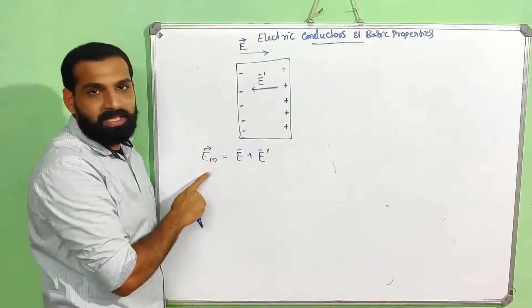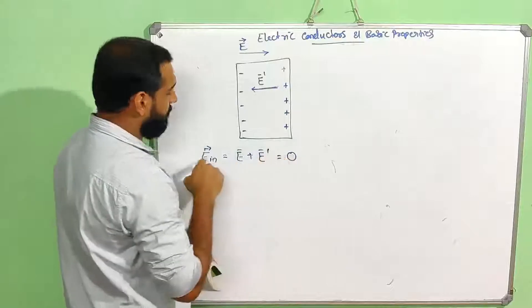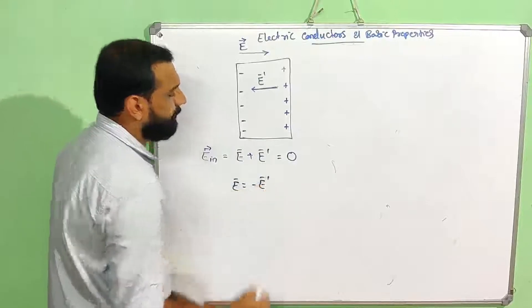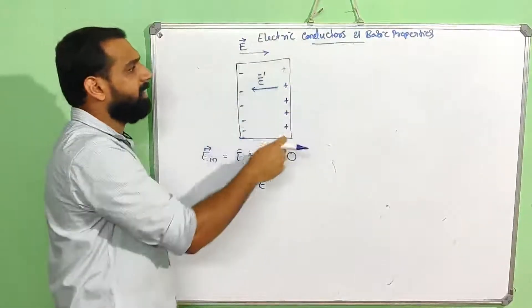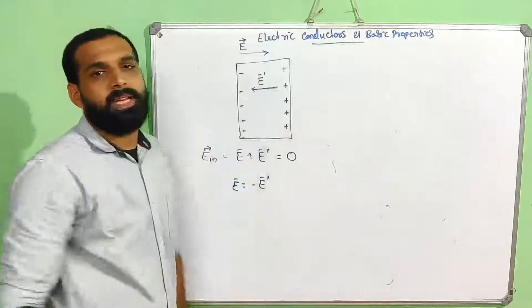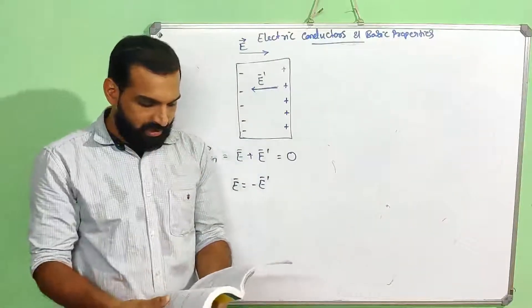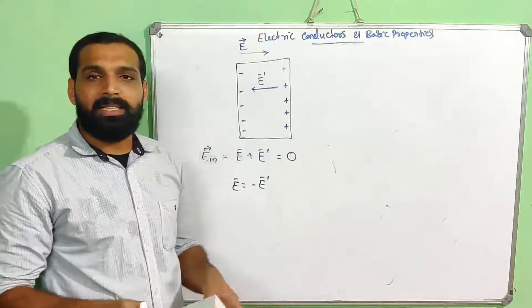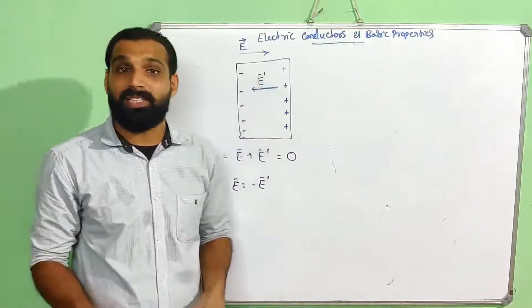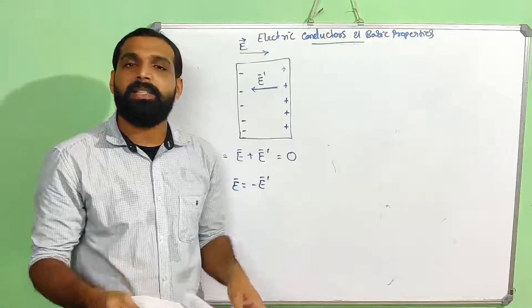The net electric field inside the conductor will be E plus E'. This separation continues until this becomes zero, which means E equals minus E'. The magnitude is the same but the direction is opposite. So the net electric field inside the conductor is zero.